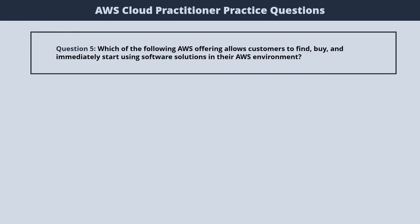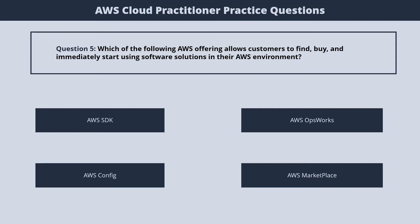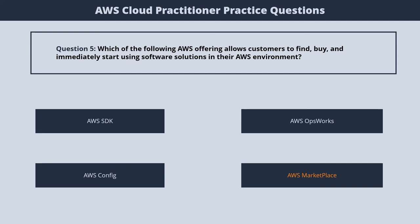Question 6. Which AWS offering allows customers to find, buy, and immediately start using software solutions in their AWS environment? 1. AWS SDK. 2. AWS OpsWorks. 3. AWS Config. 4. AWS Marketplace. The correct answer is 4. AWS Marketplace.